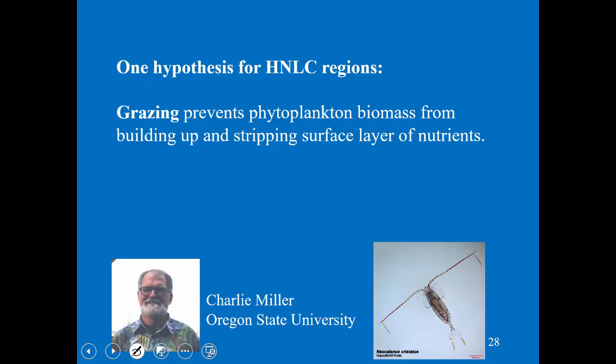One answer that was hypothesized by Charlie Miller — author of the Miller and Wheeler textbook — a zooplankton ecologist working in the subarctic Pacific. In the subarctic Pacific, there's a copepod called Neocalanus, and Charlie found they have a really unusual life cycle that allows them to be in the surface water the entire time. He hypothesized that it was grazing that was preventing the phytoplankton biomass from building up, allowing some nutrients to exist in the surface layer. He thought that because these zooplankton were in the surface layer the entire time, a bloom could never develop and strip the surface layer of nutrients.